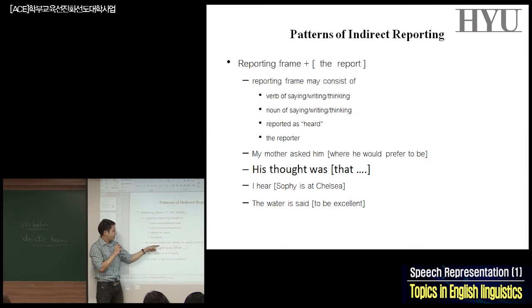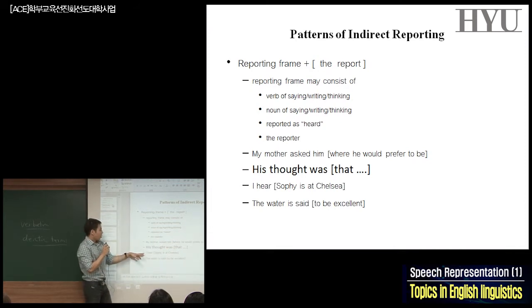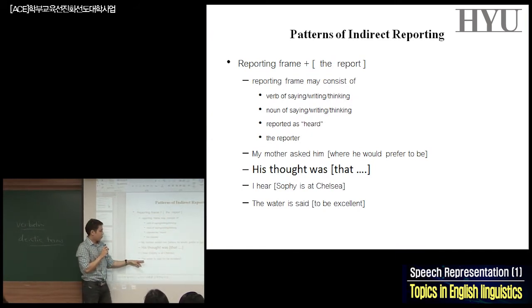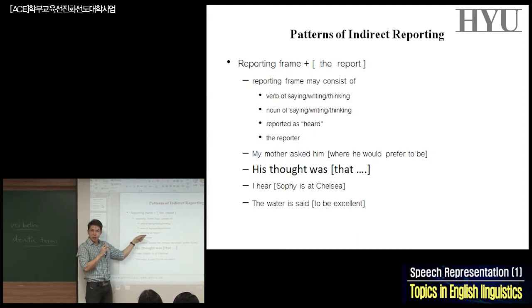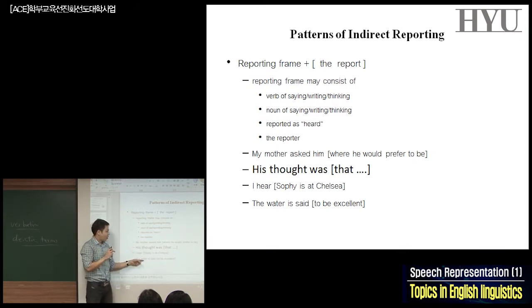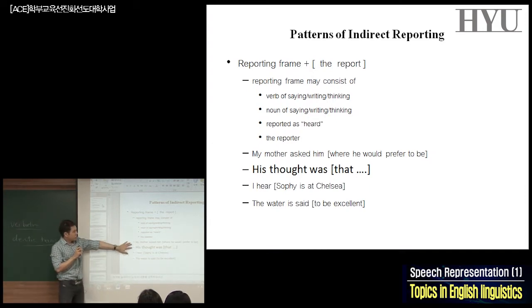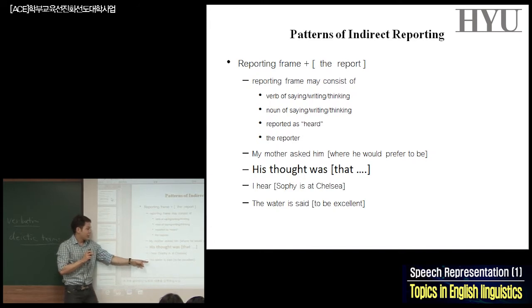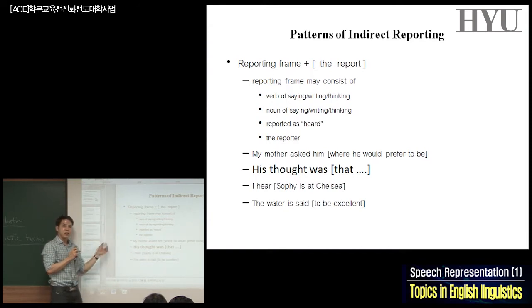This could include paraphrase. For example, 'His thought was that...' — here you don't have a reporting verb but the be-verb, so that's also indirect reporting. Or 'I hear Sophie is at Chelsea' — reported as heard. And 'The water is said to be excellent' — you only have the passive voice without the reporter. You have to notice that in text, these are all examples of indirect reporting, whether it's reported as heard or in the passive voice version without the speaker.